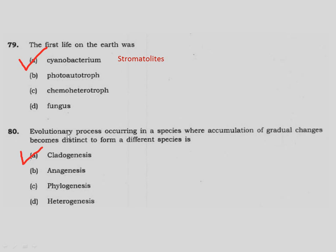Question 80: Evolutionary processes occurring in a species where accumulation of gradual changes leads to a distinct different species — this is called cladogenesis. That is, one species bifurcates into two different species. This is cladogenesis. Option A. Thank you.